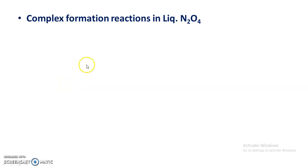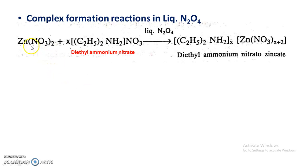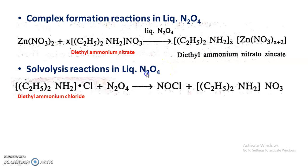In complex formation reactions in liquid dinitrogen tetroxide, when zinc nitrate is mixed with diethyl ammonium nitrate in liquid dinitrogen tetroxide, there is formation of a complex — diethyl ammonium nitrato zincate. So a complex is formed in liquid dinitrogen tetroxide.